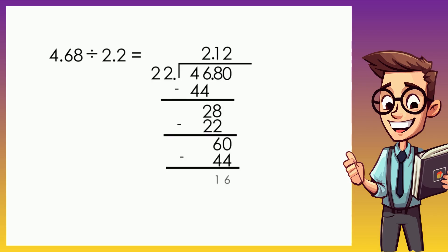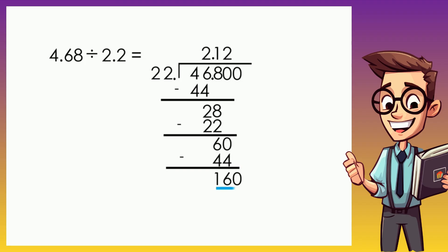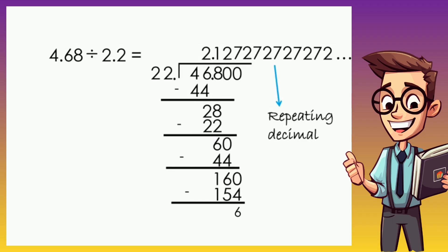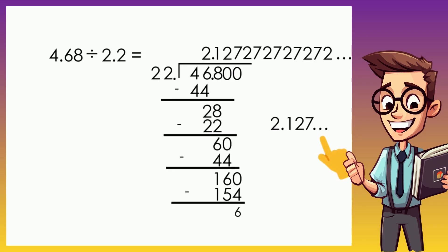Subtracting gives 16. Again we add 0, making it 160. What multiplied by 22 gets closer to 160? That number is 7, because 7 times 22 is 154. Subtracting gives 6. As you can see, the remainder is the same as what we had earlier — if we continue, we'll just repeat the same numbers over and over. This is what we call a repeating decimal, and no matter how long you divide it will never end. So we can just stop at the thousandths place and add three dots to indicate the decimal never ends.